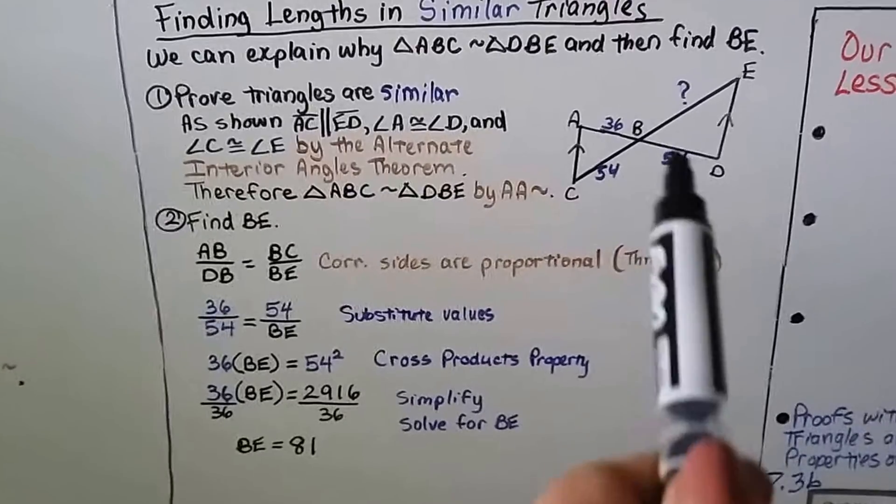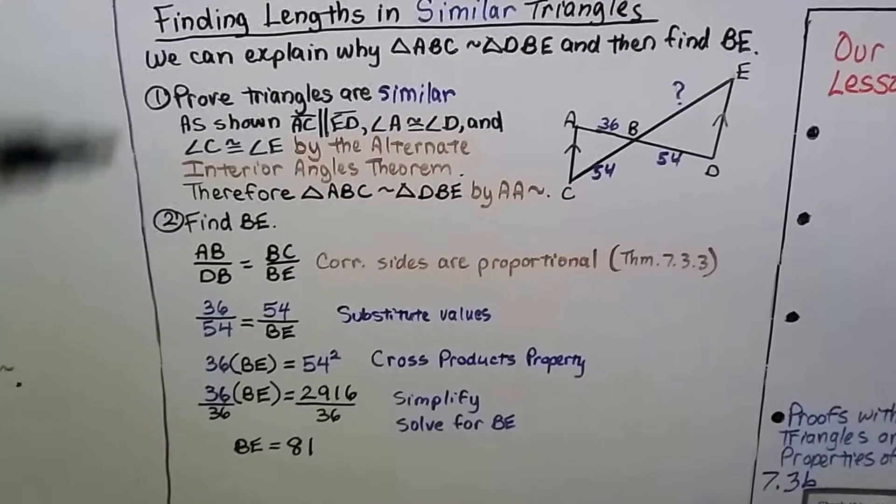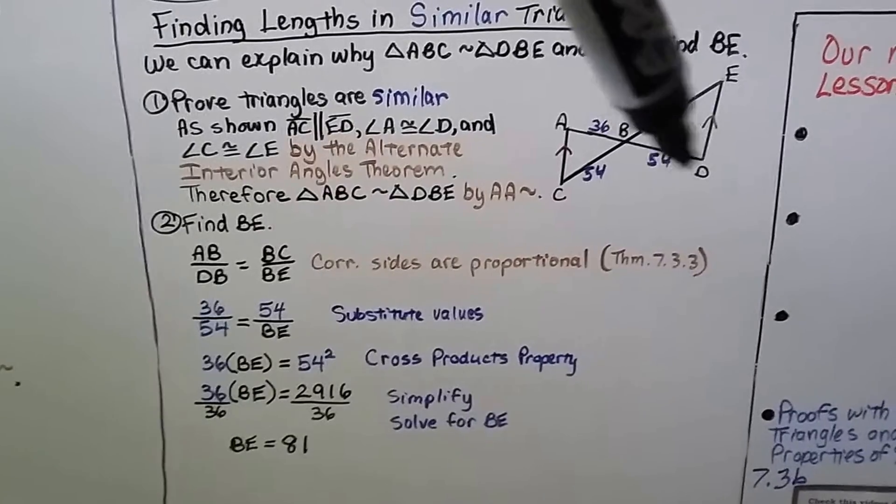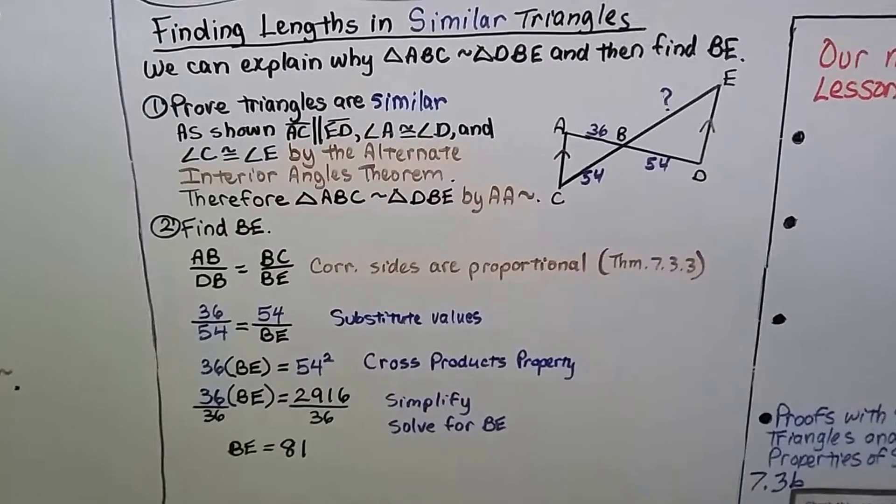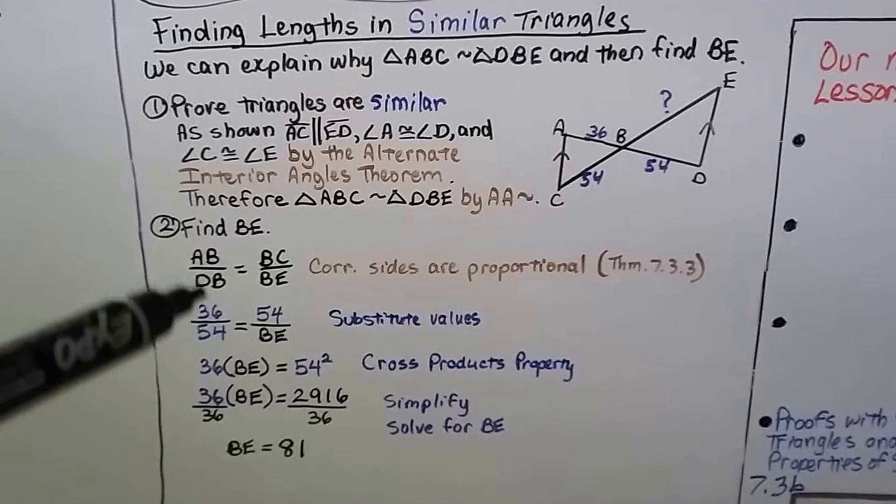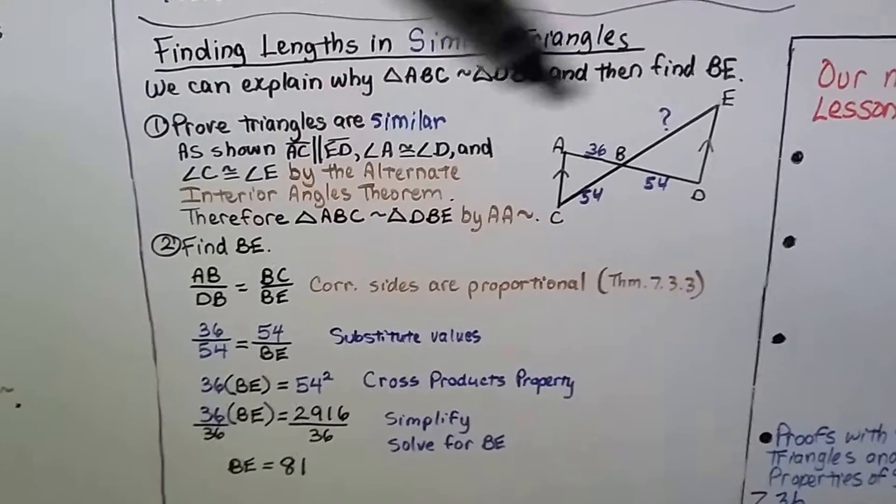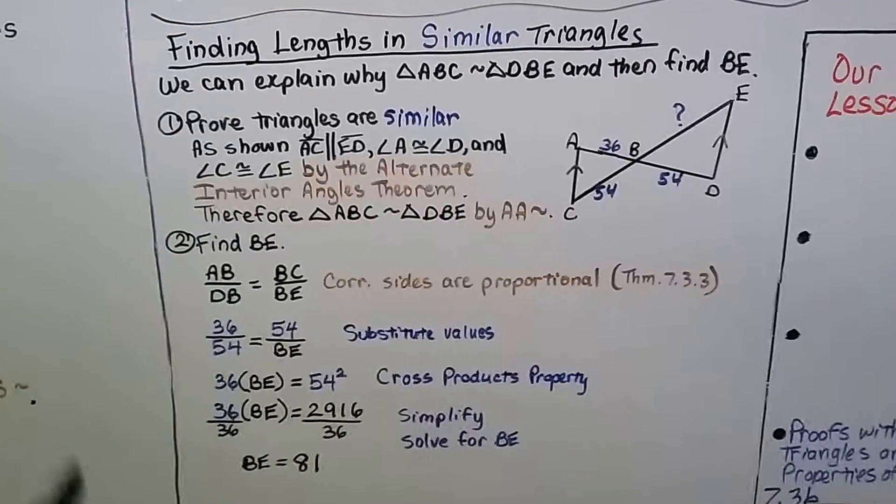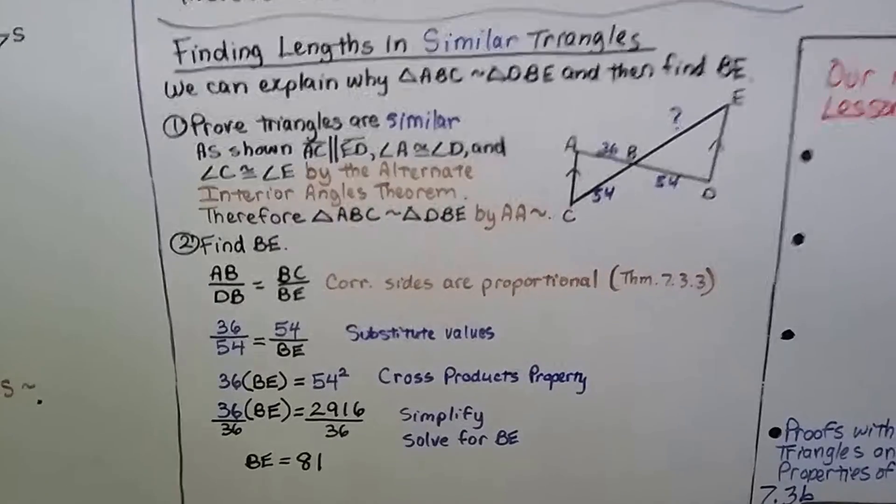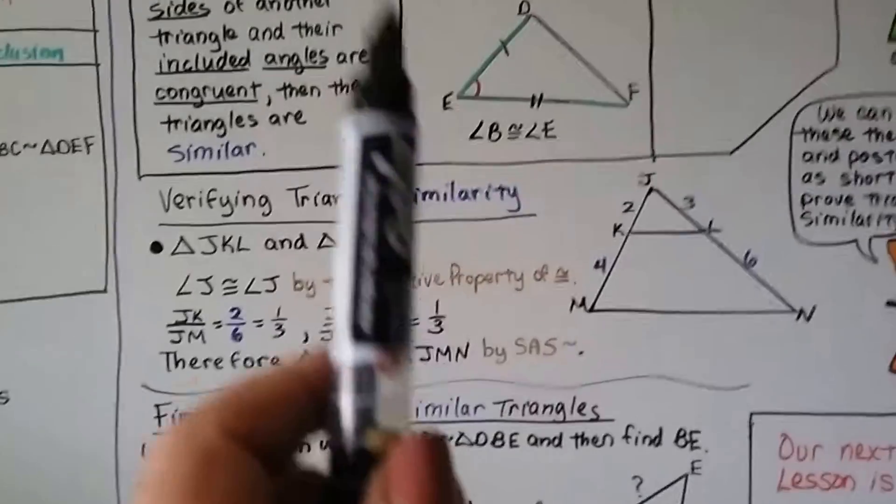Now we find BE. AB, this 36, corresponds to BD or DB. So we write it like this. And BC, this one, this 54, corresponds to the BE here. That's the corresponding sides of proportional from the theorem we just did.